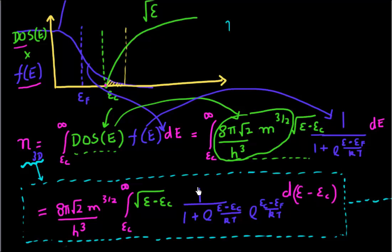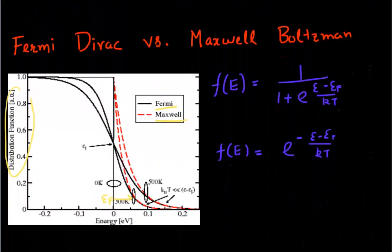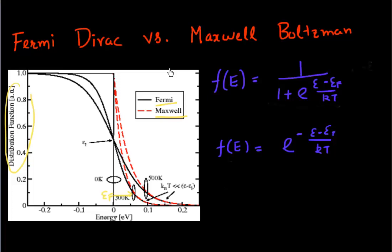I'll walk you through it, but don't get daunted when we use these integrals. The first thing I need to do to simplify this integral is — one of the possible things I can do is, instead of writing this 1 over 1 plus exponential function, I can simplify this part by using Maxwell-Boltzmann statistics instead of Fermi-Dirac statistics.